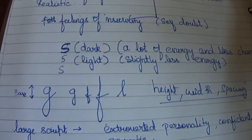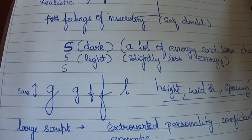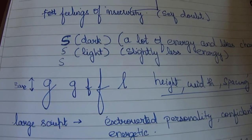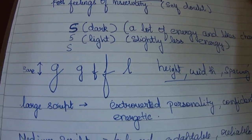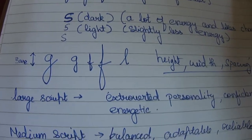Has a lot of energy and likes variety. Whereas if it is not very dark, slightly on the lighter side, then you can say that the person has slightly less energy. If it is very light, the energy goes down. Now another important point is the size of the handwriting.